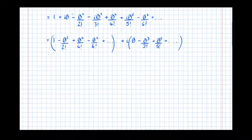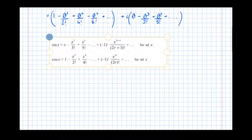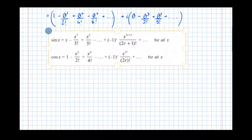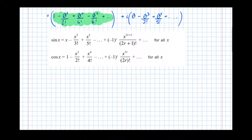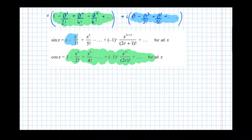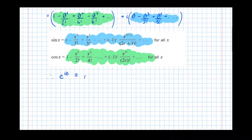Now if I compare what we've just written to the Maclaurin expansion — as per the formula sheet — for sine x and cos x, I can see that what I'm highlighting green is just the standard Maclaurin expansion for cos x, and what I'm highlighting blue is the Maclaurin expansion for sine x. So the green part equals cos x, and the imaginary part in blue equals sine x. Therefore I can conclude that e to the i theta is identical to cos theta plus i sine theta.